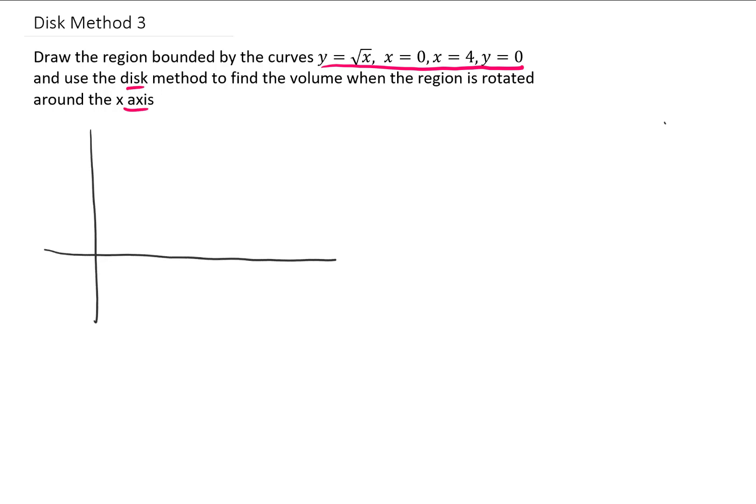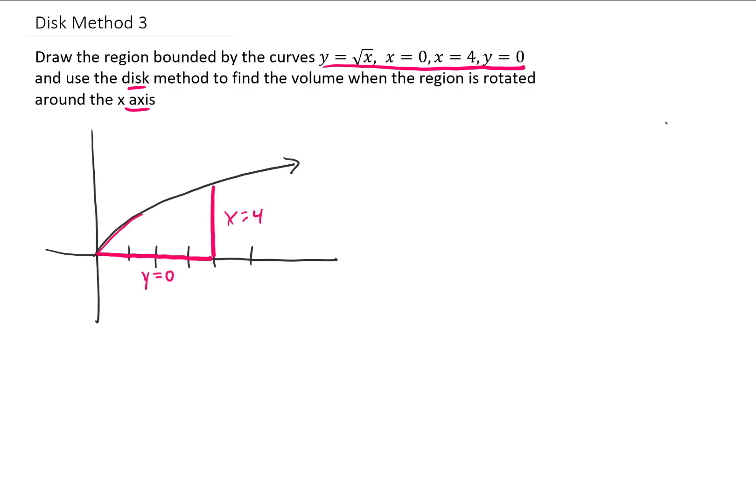Now graphing first the square root of x function, we know that that looks something like this. Our region goes from x equals 0 to x equals 4, and it's also bounded by y equals 0, which is just this x-axis here. The x equals 0 in this problem is not really necessary. So our region looks just like this.